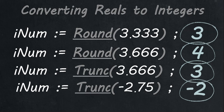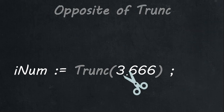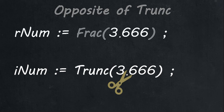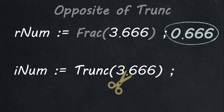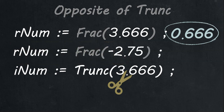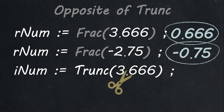Now, what if we want the opposite of trunc? Instead of cutting off the decimal and keeping the front, we cut off the front number and keep the decimal. For that we use frac, which finds the fractional part of the number given in brackets. So frac of 3.66 gives 0.666 — a real number — so you must store it in a real variable. Just take note that if you do frac of a negative number, the negative stays attached to the decimal part. So frac of negative 2.75 gives negative 0.75.